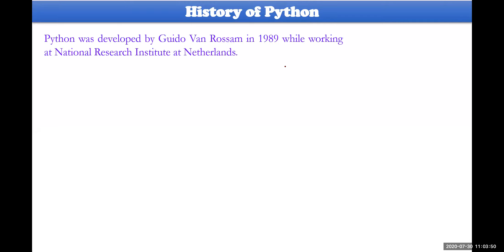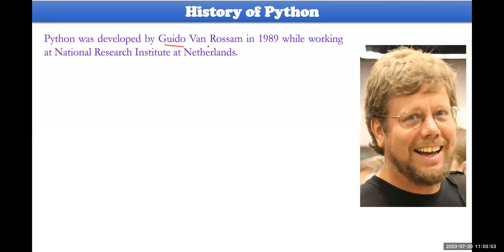Python was introduced by Guido van Rossum — he is the person who introduced it to the IT industry. In 1989, he was working with the National Research Institute at Netherlands. When he was a Master's student — MS student, Master of Science student — he was taking a project as a compiler or interpreter kind of computer science project. It was evaluated and continued at the National Research Institute also.